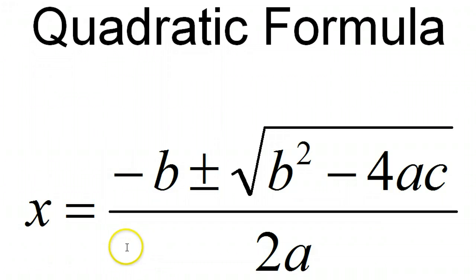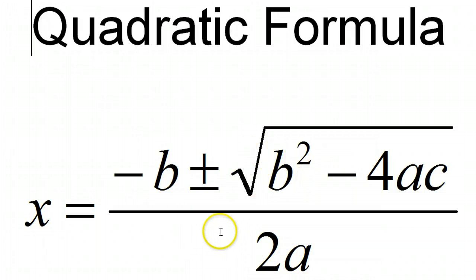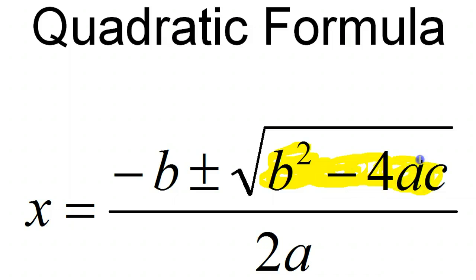Here's the quadratic formula. There's a little song to help you remember it, set to the tune of Frère Jacques: opposite of b, opposite of b, plus or minus square root, plus or minus square root, b squared minus 4ac, b squared minus 4ac, all over 2a, all over 2a. The part under the radical — b squared minus 4ac — has a special name: it's called the discriminant. I recommend always calculating the discriminant first, then completing the rest of the formula.